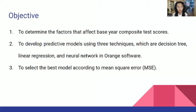We have three objectives. The first is to determine the factors that affect the baseline composite data score. The second is to develop predictive models using three techniques — decision tree, linear regression, and neural network — in Orange software. The third is to select the best model according to mean square error, MSE.